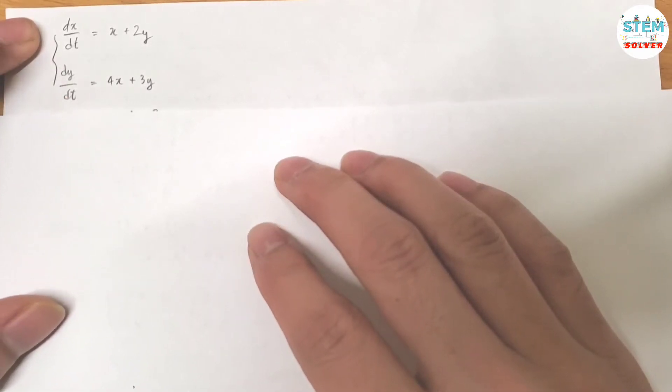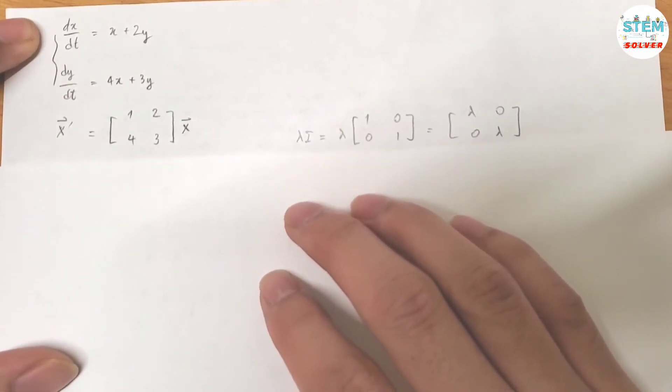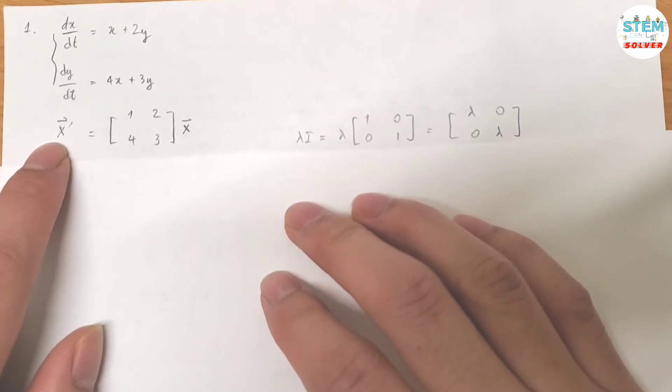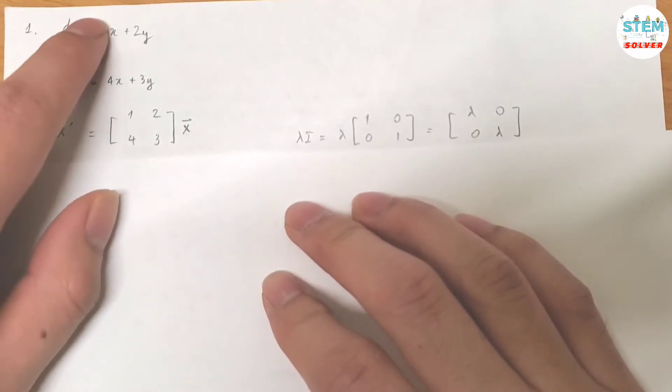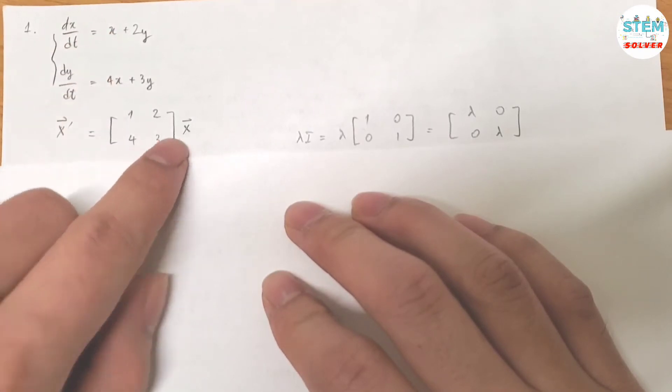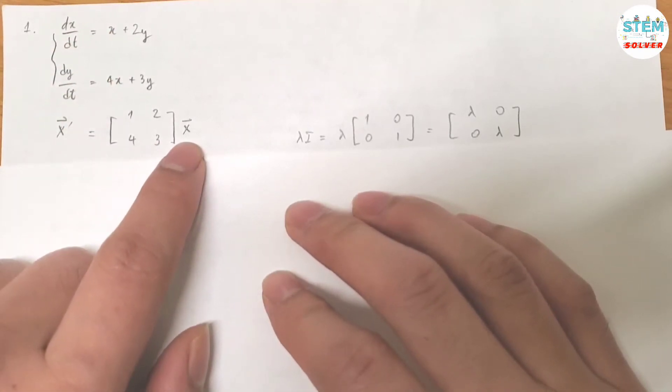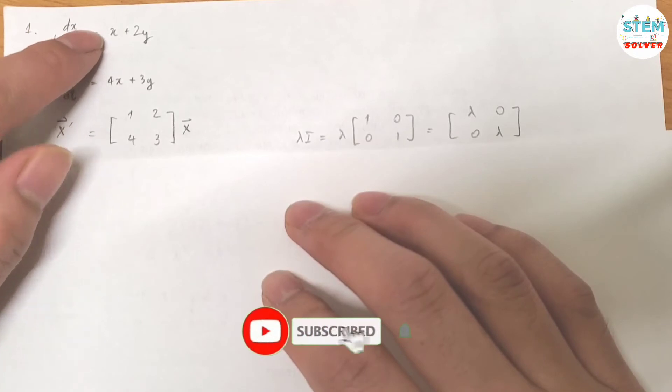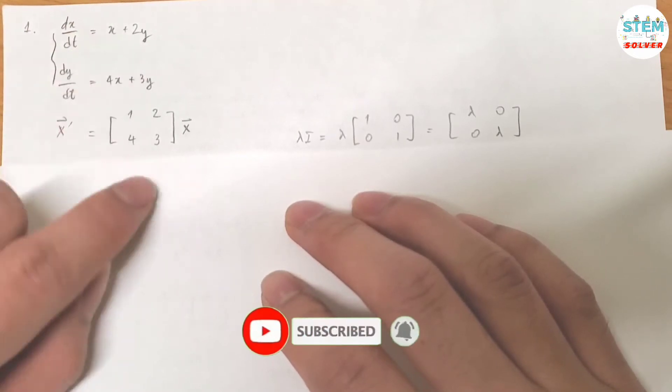So first of all, you need to rewrite it in a standard form which is vector x prime equals... Put this into a matrix times vector x. So here's basically you just bring down the leading coefficient of x and y and put it into a matrix.